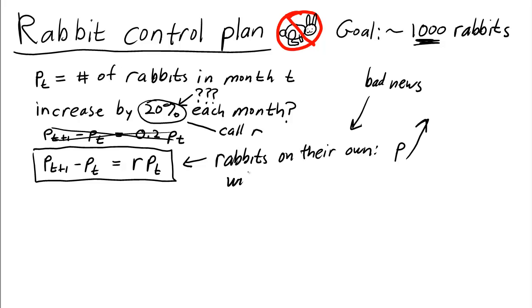Okay, we'll fix that. We need to fix that. What we could do is somehow remove a certain number of rabbits each month. Let's call it h sub t for harvesting or harvest those rabbits. So we could remove h sub t rabbits per month.